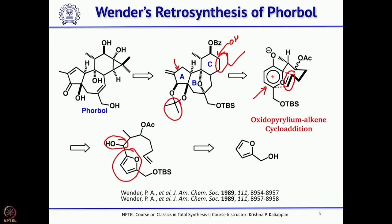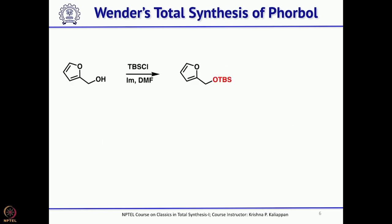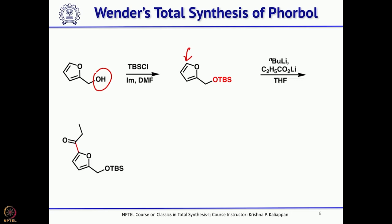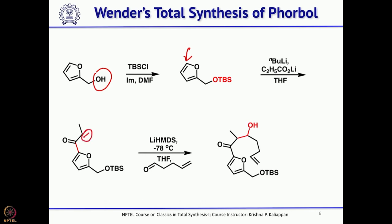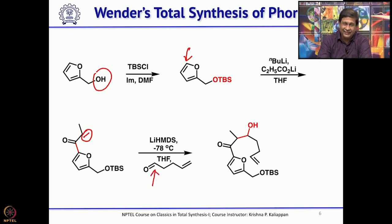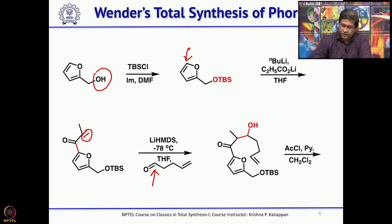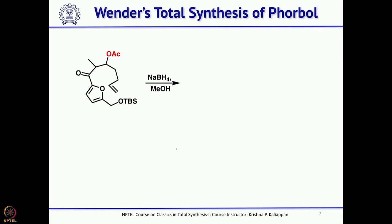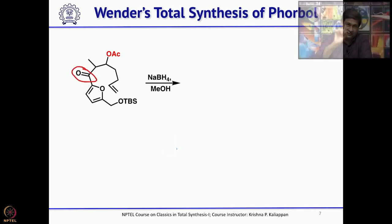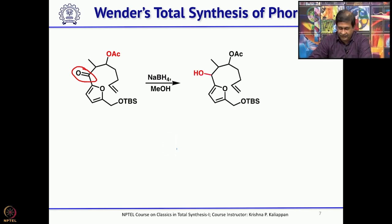Starting from furfural alcohol, the primary alcohol was first protected as a TBS ether. Then the furan was lithiated at the other side and quenched with lithium propionate to introduce the propionate group. An intermolecular aldol reaction was then carried out: the enolate was generated with lithium hexamethyldisilazide and quenched with pentenal to give the aldol product. The hydroxyl group was protected as acetate, then the ketone was reduced to the alcohol needed for the key oxido-pyrilium–alkene cycloaddition reaction.